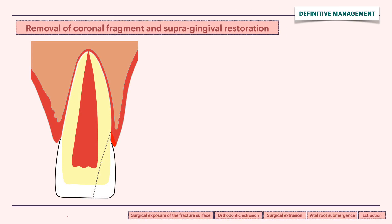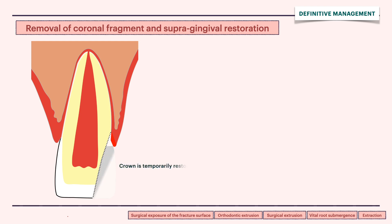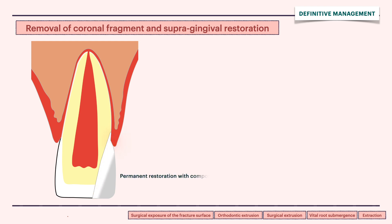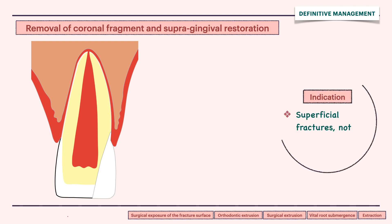The first treatment option involves removal of the fractured segment and smoothening of rough margins. This is followed by temporary supra-gingival restoration. Then we have to wait 2-3 weeks for healing of the inflamed gingiva. Once the gingiva heals, permanent restoration is done. This is indicated in superficial fractures not involving the pulp.